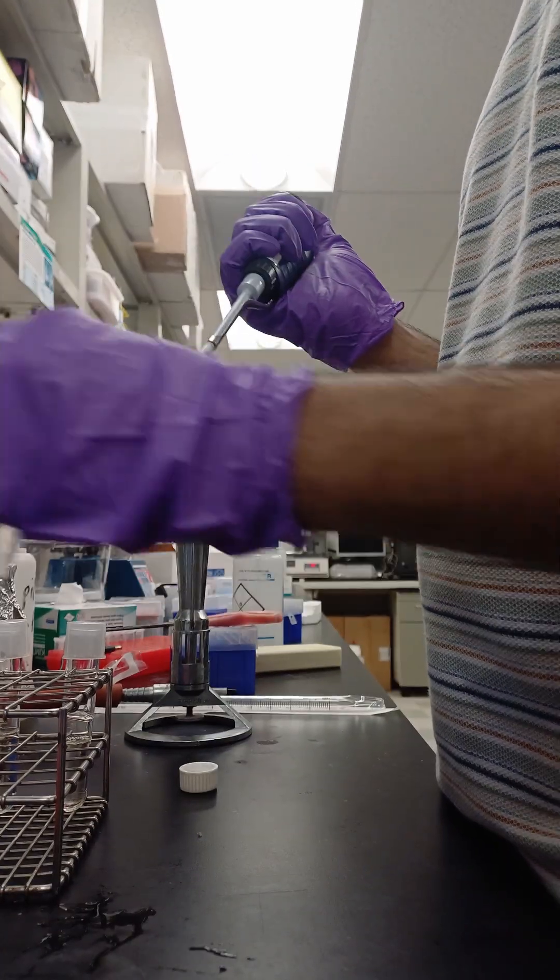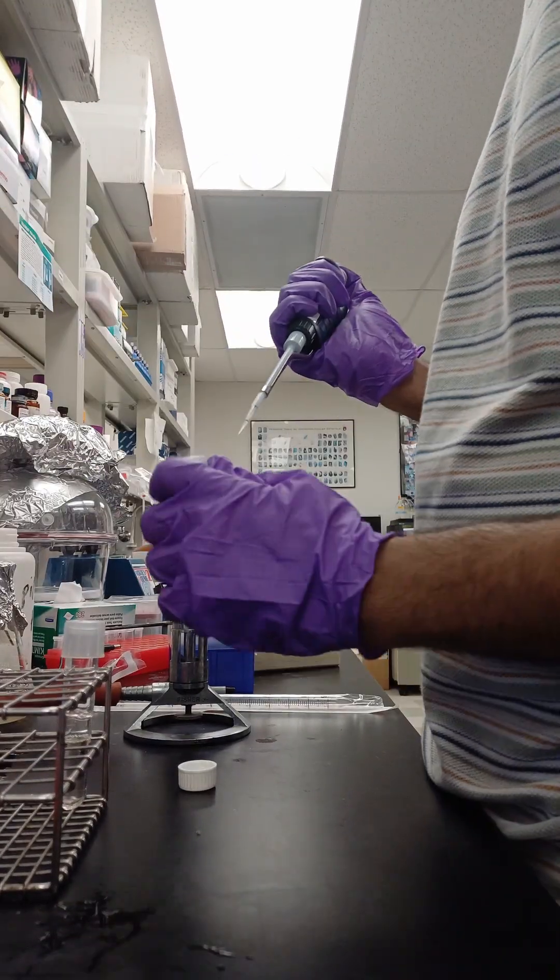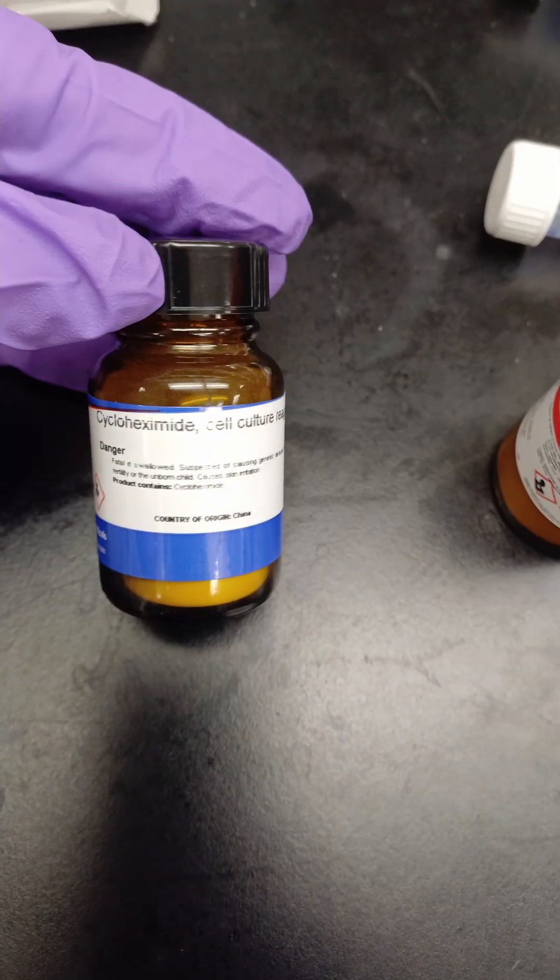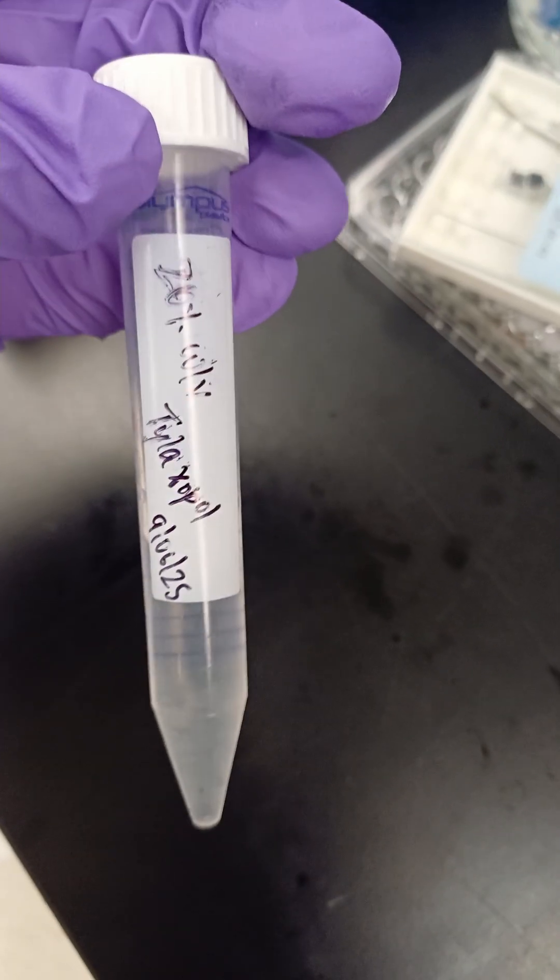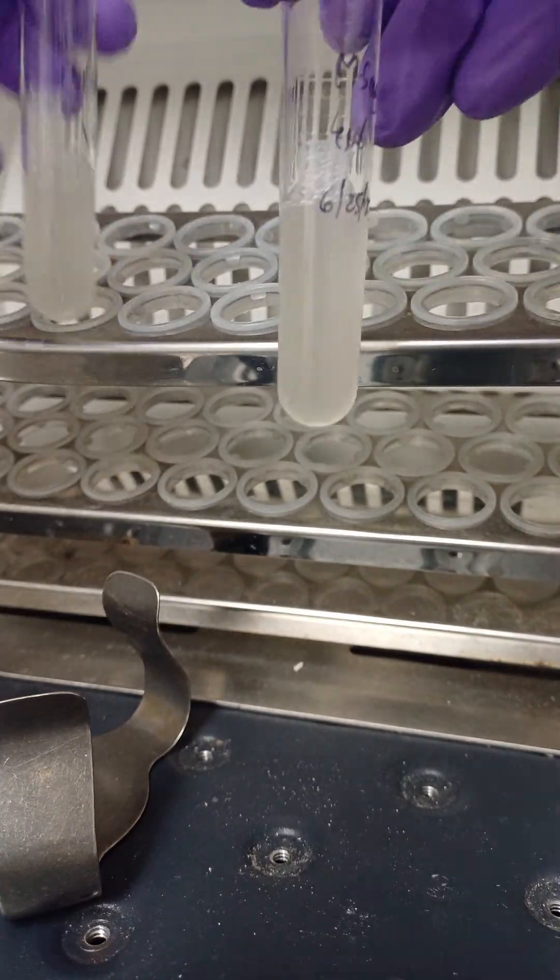I add cycloheximide, which is an antifungal agent, carbenicillin, which is an antibacterial agent, and Tween-80, which prevents clumping of the mycobacterial cells during growth.